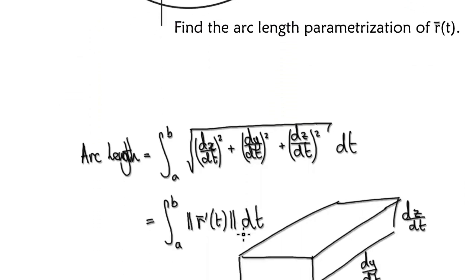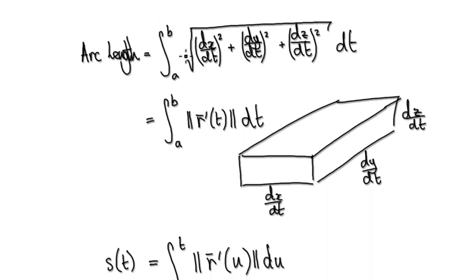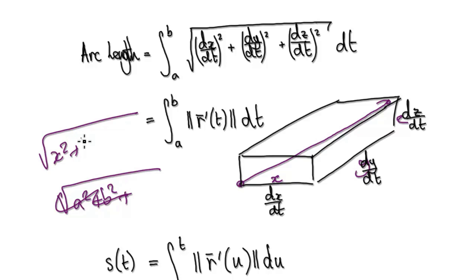So remember from some of the early videos, we started out with arc length equals this. And remember, back in high school, you're given a box here with x, y, and z, the longest distance is given by square root x squared plus y squared plus z squared. And that will give you the longest length.